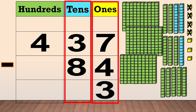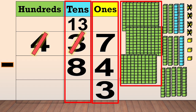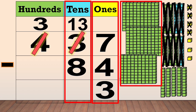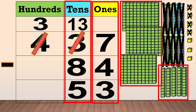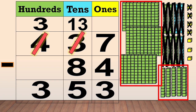Now we have 13 tens. We cross out the three and write 13 as new tens. Now we only have three hundreds — we cross out the four and write three at the top. Then we subtract the tens: 13 minus eight equals five. Now we subtract the hundreds — we have three hundreds but there is no number in the hundreds column, so there is nothing to subtract. We bring down the three hundreds. Our final answer is 353.